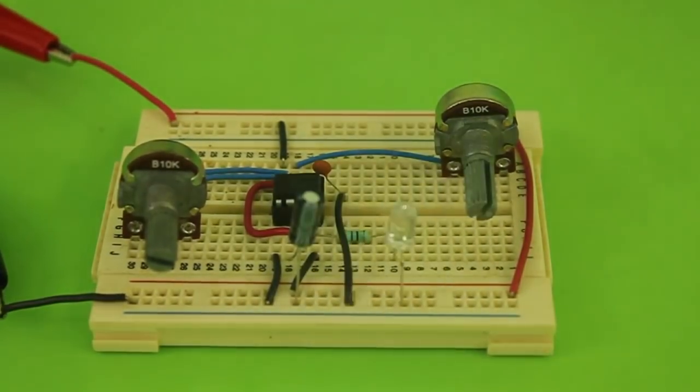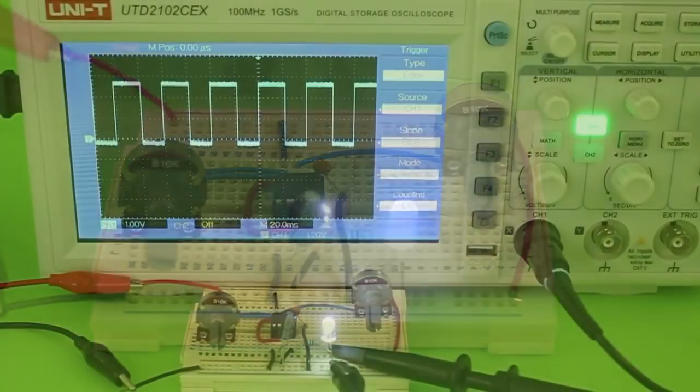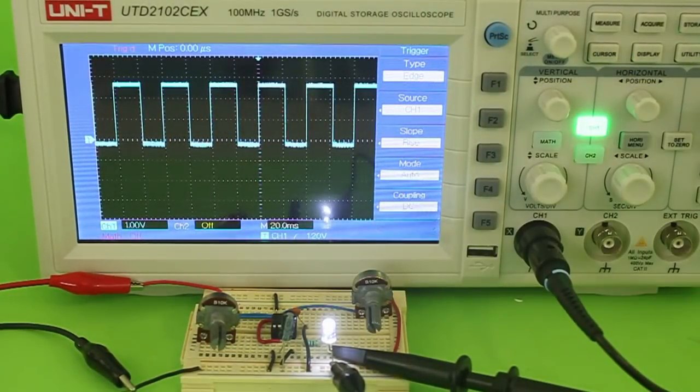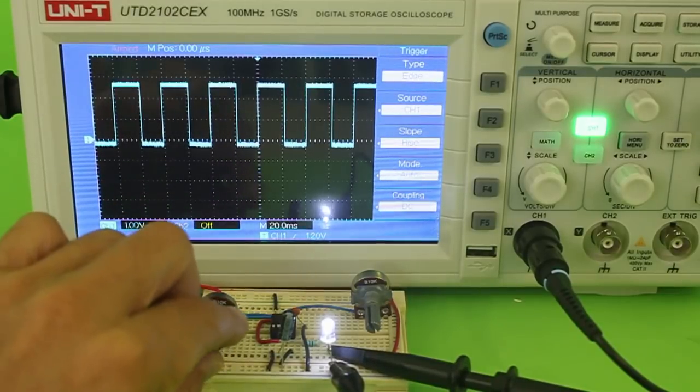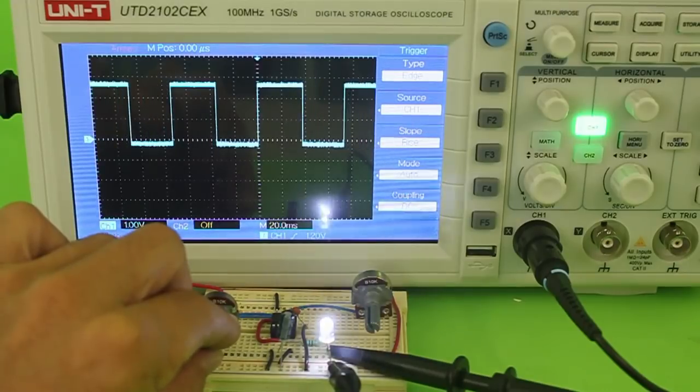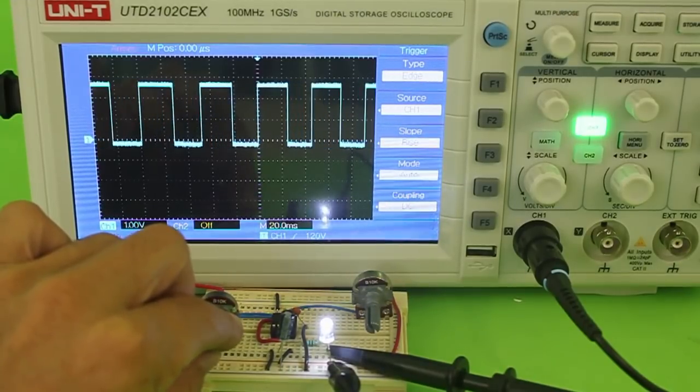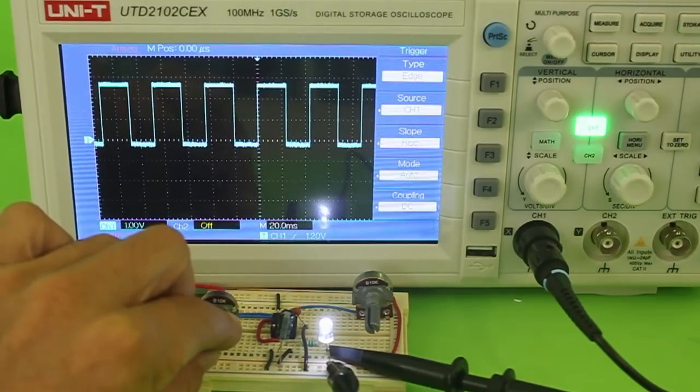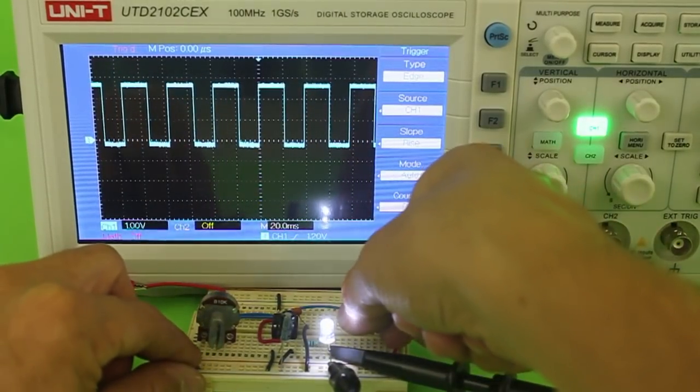Let's now see it in the oscilloscope. Here it is, you can see the square wave in the oscilloscope screen. And moving this potentiometer, we change the form of the square wave, and with the other we can also change the shape.